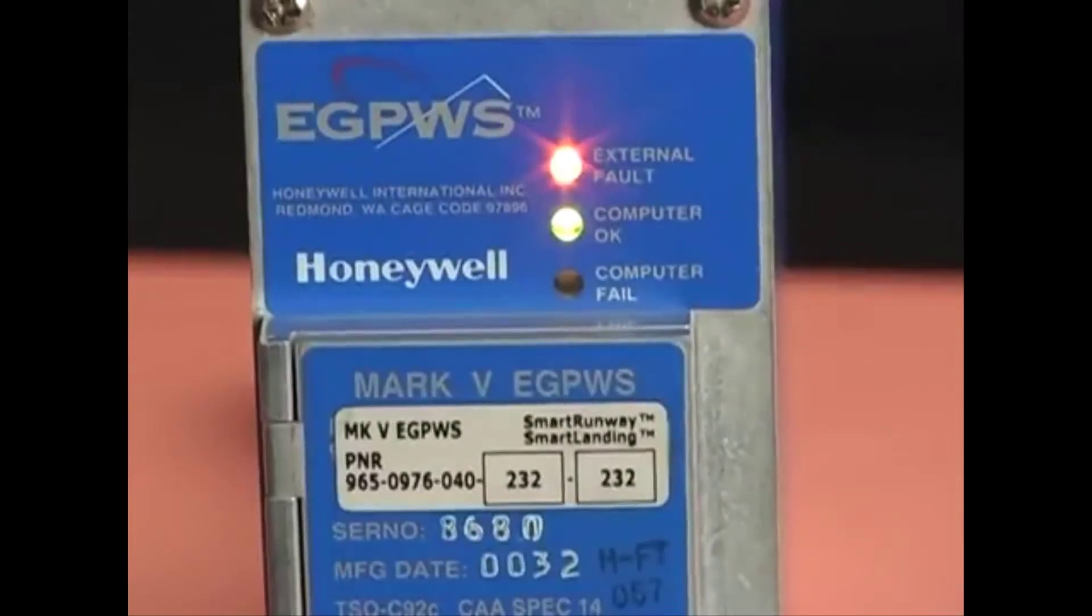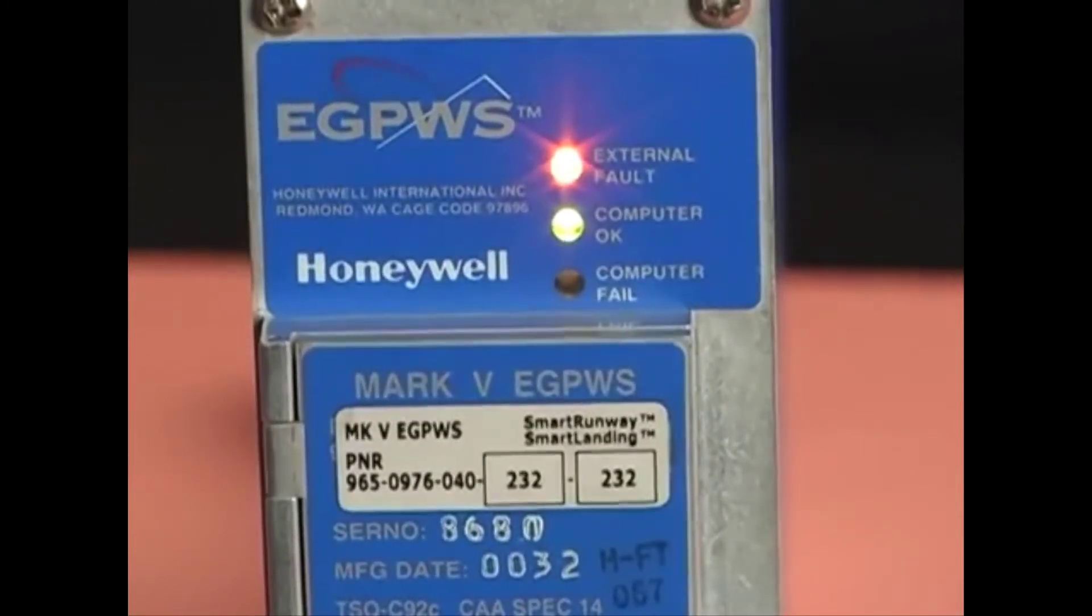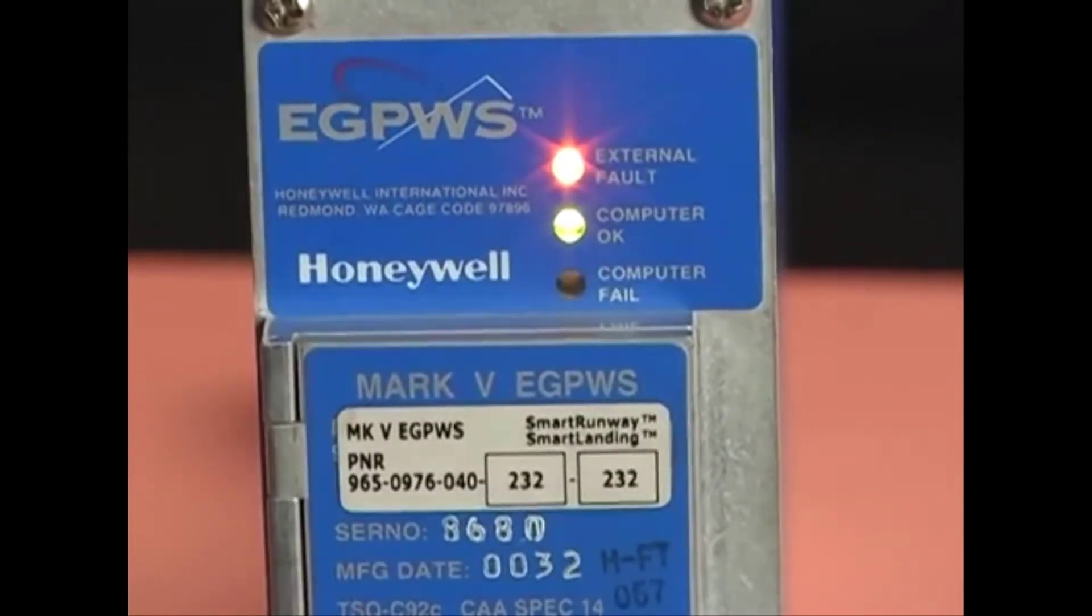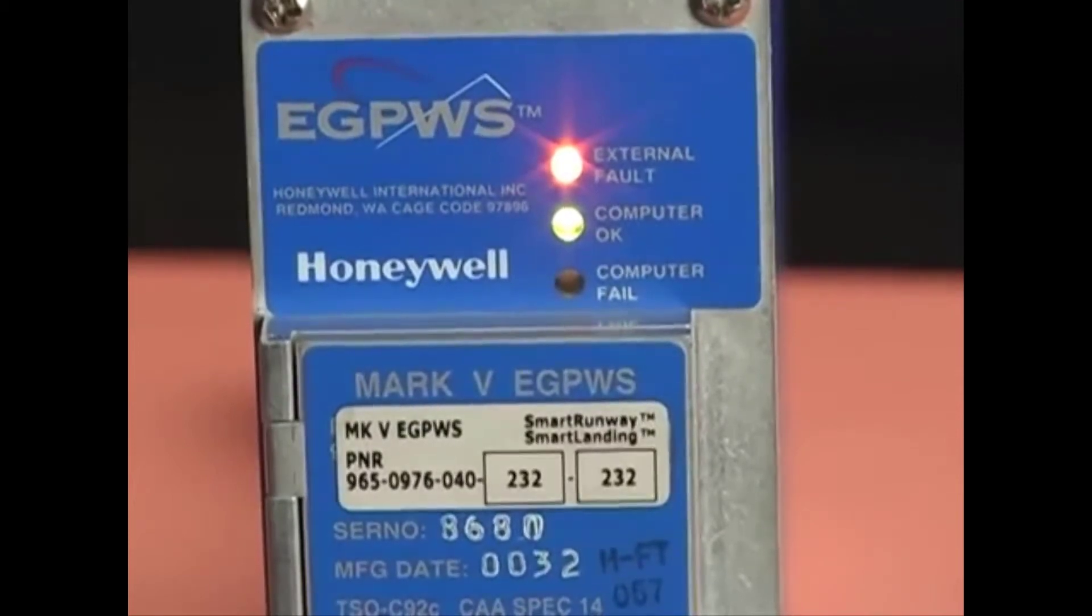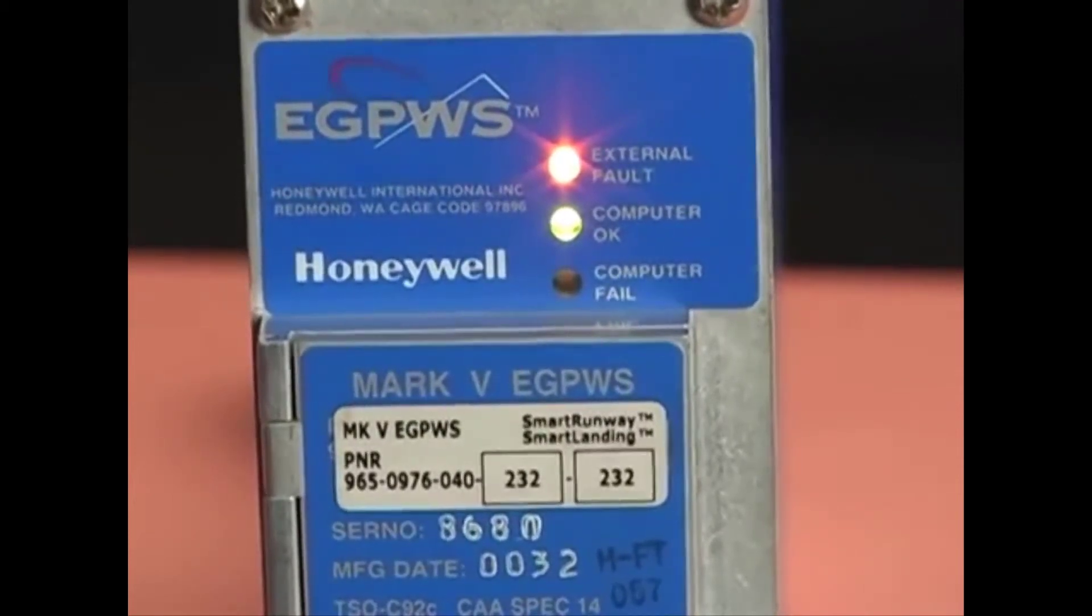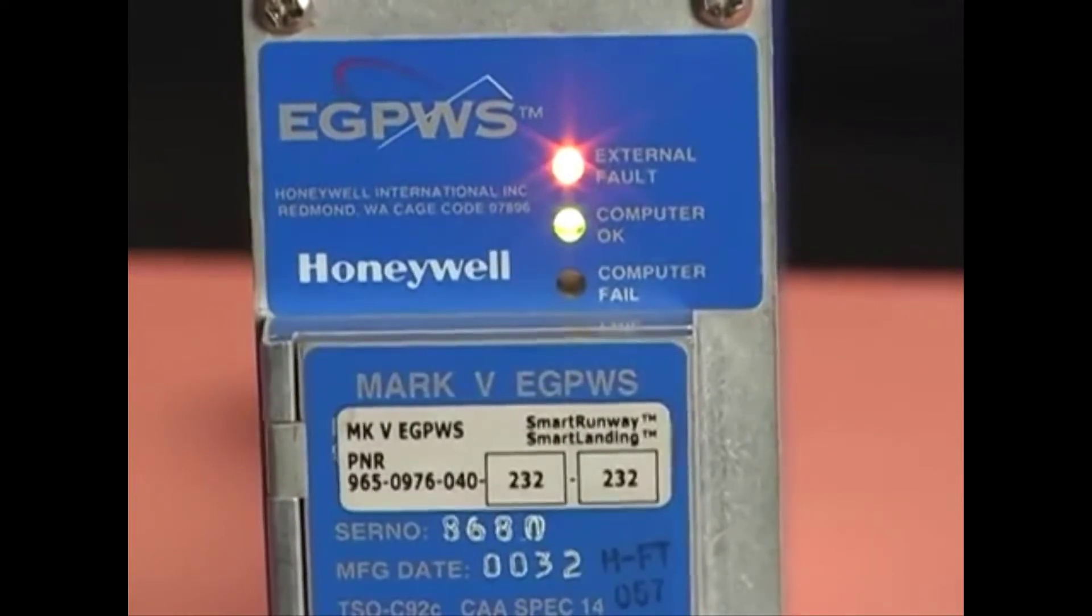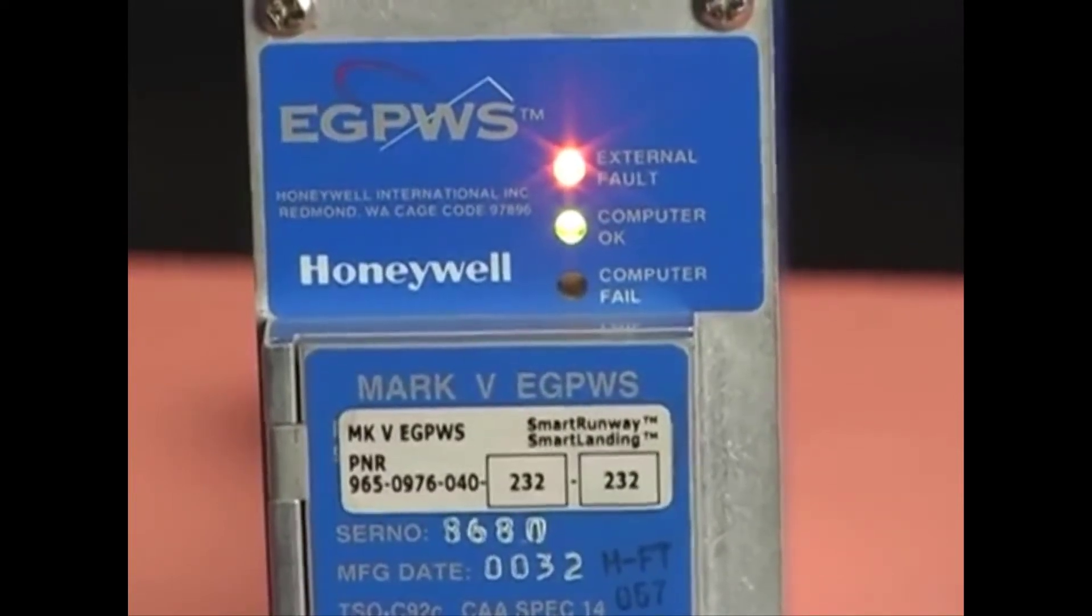The yellow External Fault LED indicates a problem with something outside the eGPWC, such as an external sensor, a system, or wiring. The red Computer Fail LED indicates a problem inside the eGPWC.